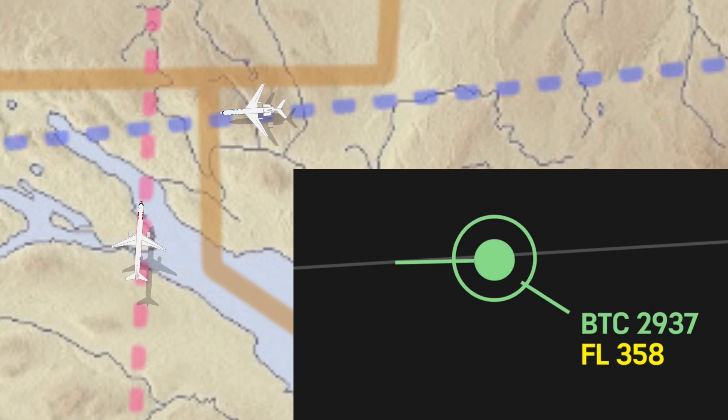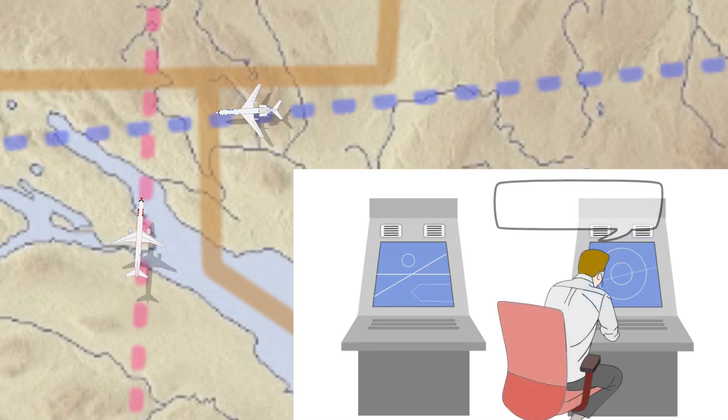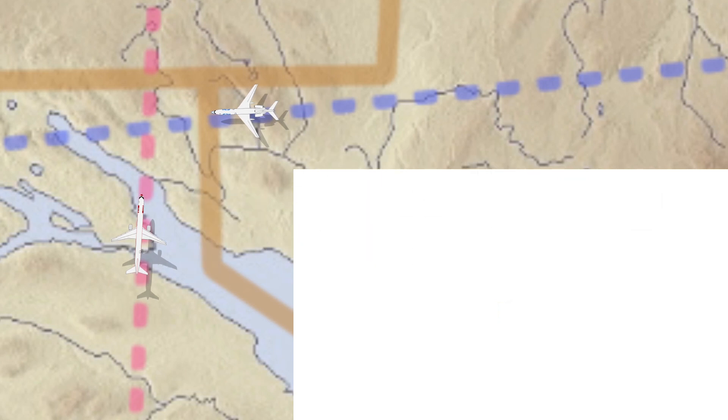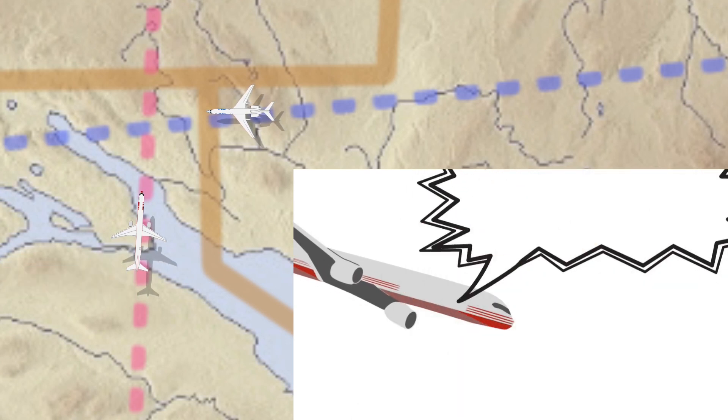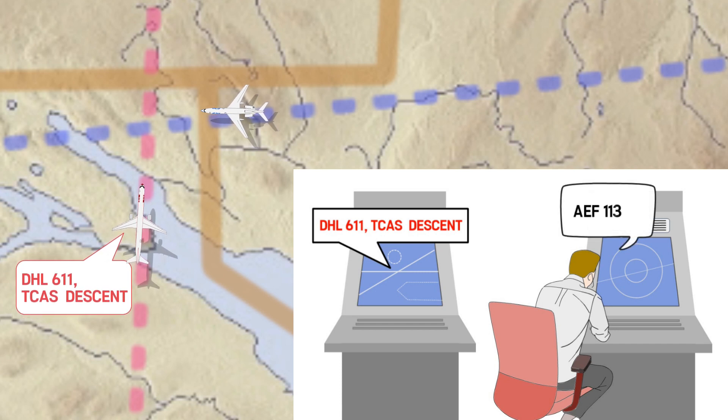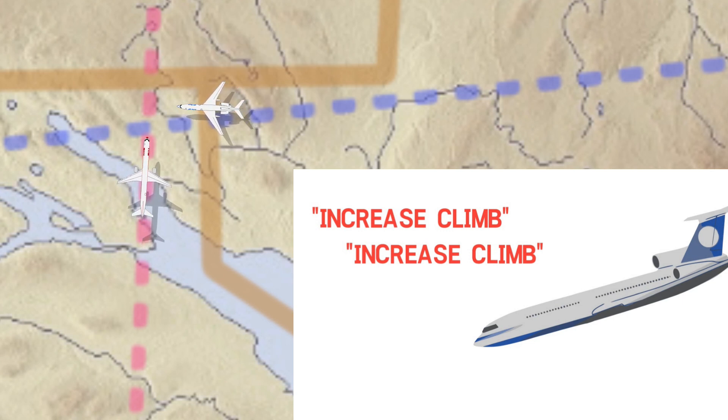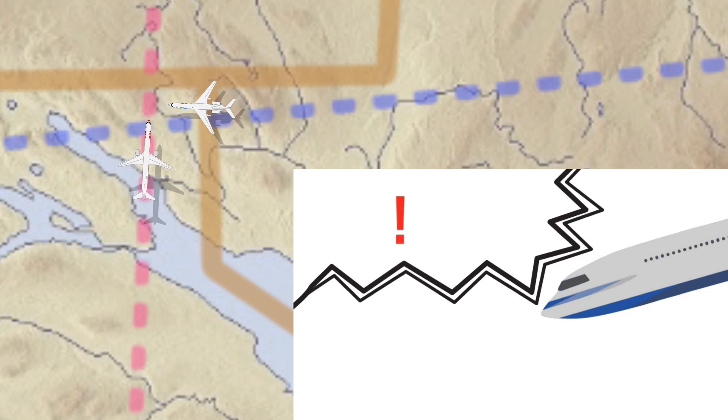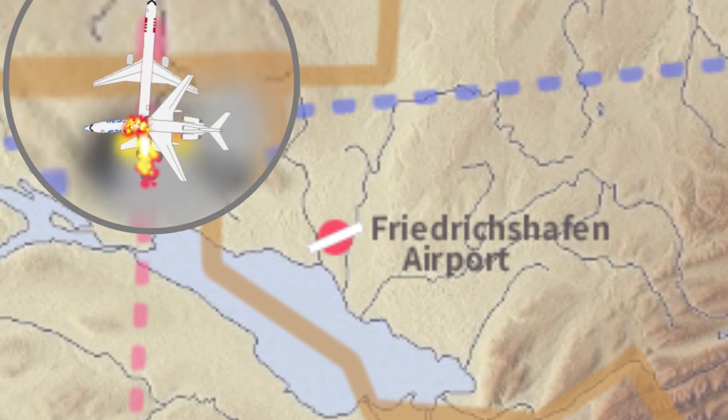The controller detected BTC-2937 descending through radar. Thus, he misunderstood that the aircraft had escaped the risk of collision and moved to the right to control AEF-1135, who called the controller twice. DHL-611 received a TCAS RA, increased descent. DHL-611 informed the controller that it is starting the TCAS descent. However, the controller did not notice this because the calls of AEF-1135 were sent out at the same time. BTC-2937 received TCAS RA, increased climb. Lately, BTC-2937 found DHL-611 and attempted to climb. However, two aircraft that were heading to the same point with the same altitude eventually collided in the air.